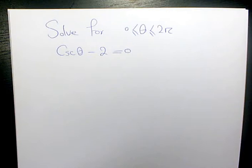The equation is cosecant theta minus 2 equals 0, and we need to solve it for theta between 0 and 2π.